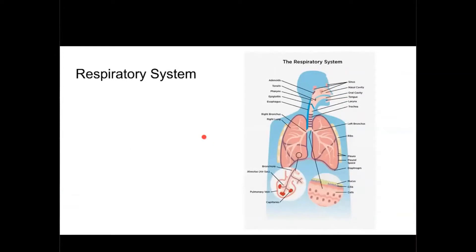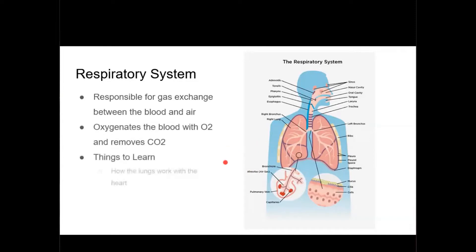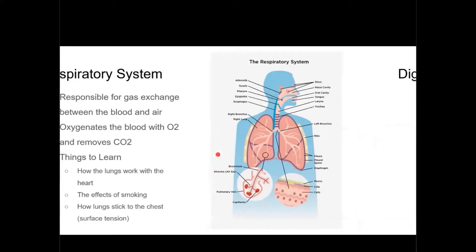Next we're going to talk about the respiratory system. The respiratory system handles the gas exchange of oxygen and carbon dioxide within the blood. Blood comes from the heart into the lungs and becomes oxygenated there. The key things you want to know is how the lungs connect to the heart, what the effects are of smoking, what specifically happens when you smoke and how it damages the lungs. You also want to know how the lungs stick to the chest cavity and how they remain contacted when you breathe in.